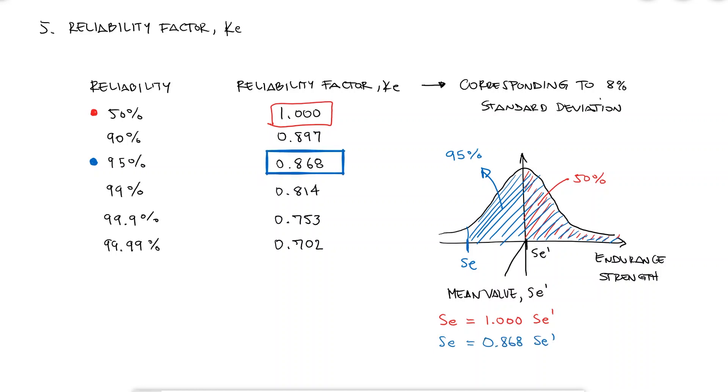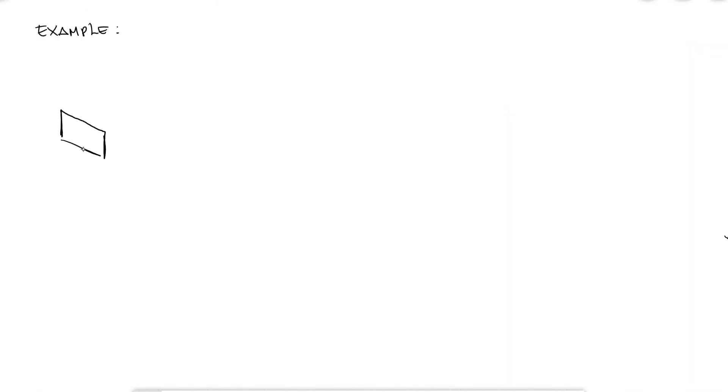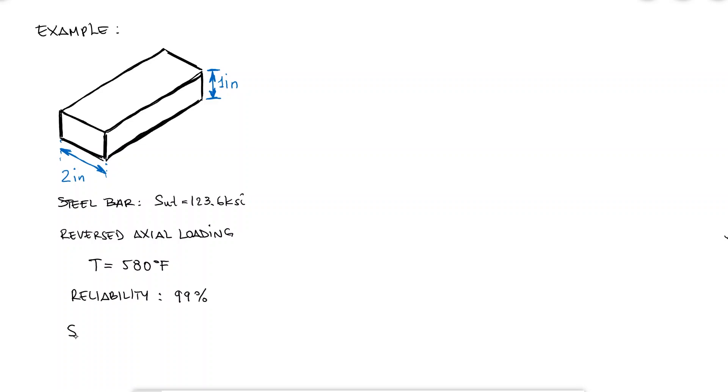Let's put all of these into work with a simple example, and remember, the whole process for this fatigue life approach is focused on modifying the strength. The stresses remain the same, and there is nothing new to the process of calculating stresses that you already knew how to carry out during your mechanics of materials course. A hot rolled steel bar with an ultimate strength of 123.6 KSI has been machined to have a 1 by 2 inch cross-section area. The part will be subjected to reversed axial loading in an operating environment of 580 degrees Fahrenheit. What is the fatigue strength for 50,000 cycles using a reliability of 99% for the endurance limit estimate?